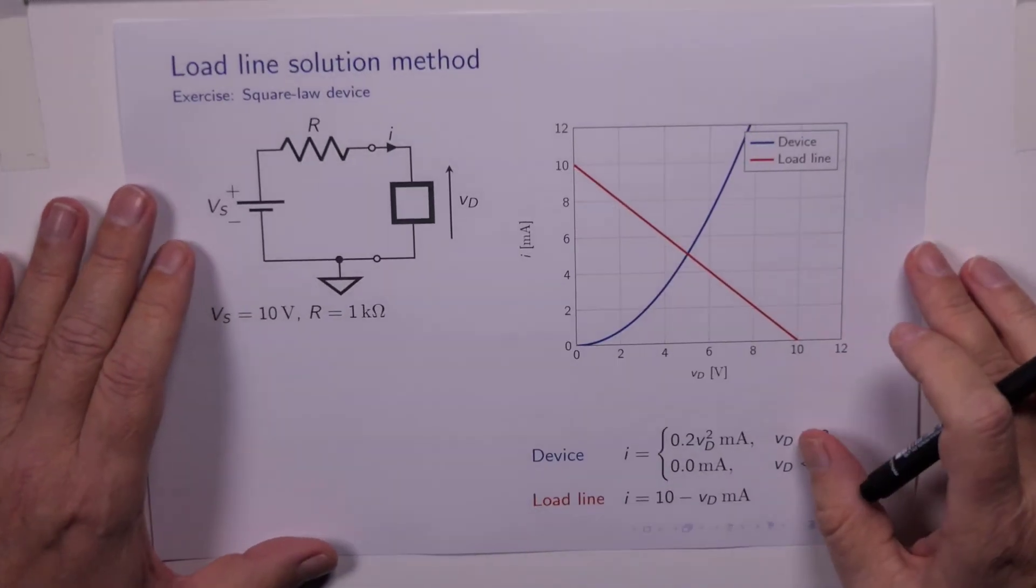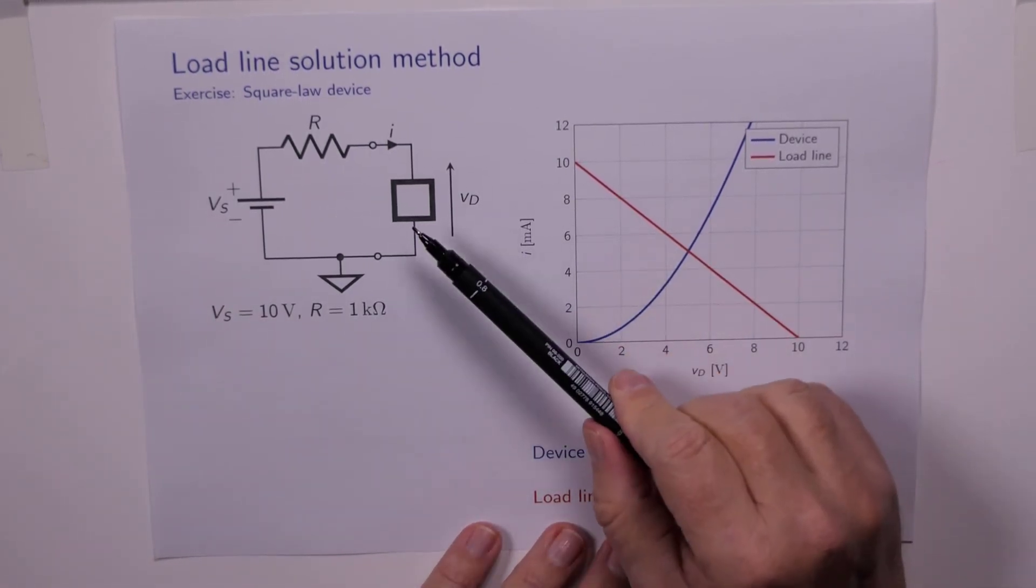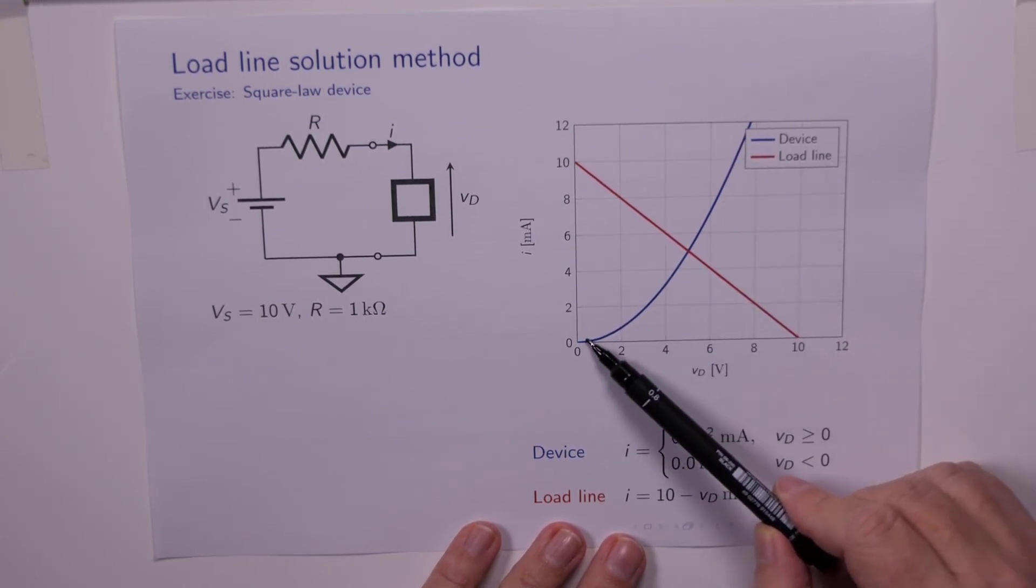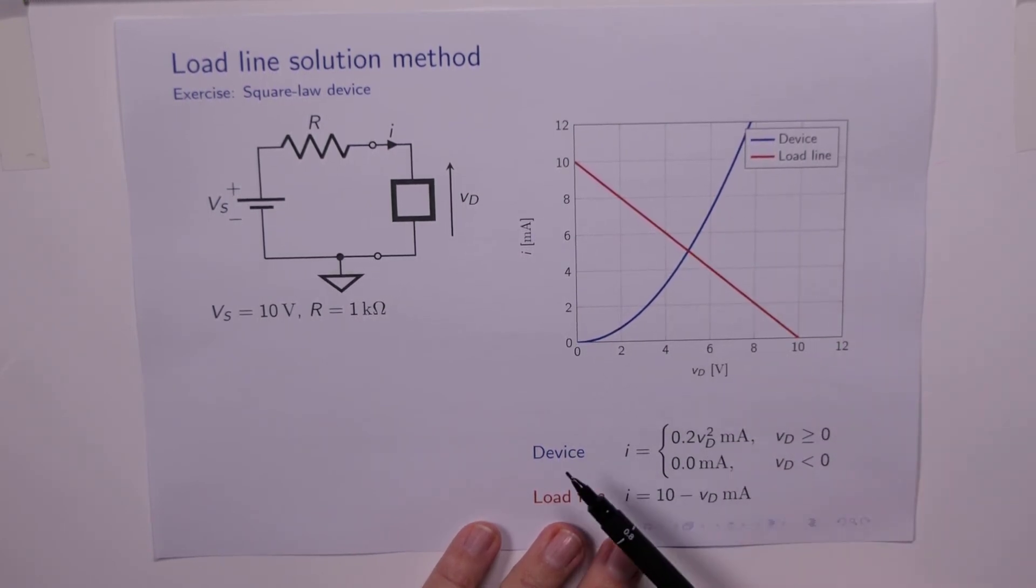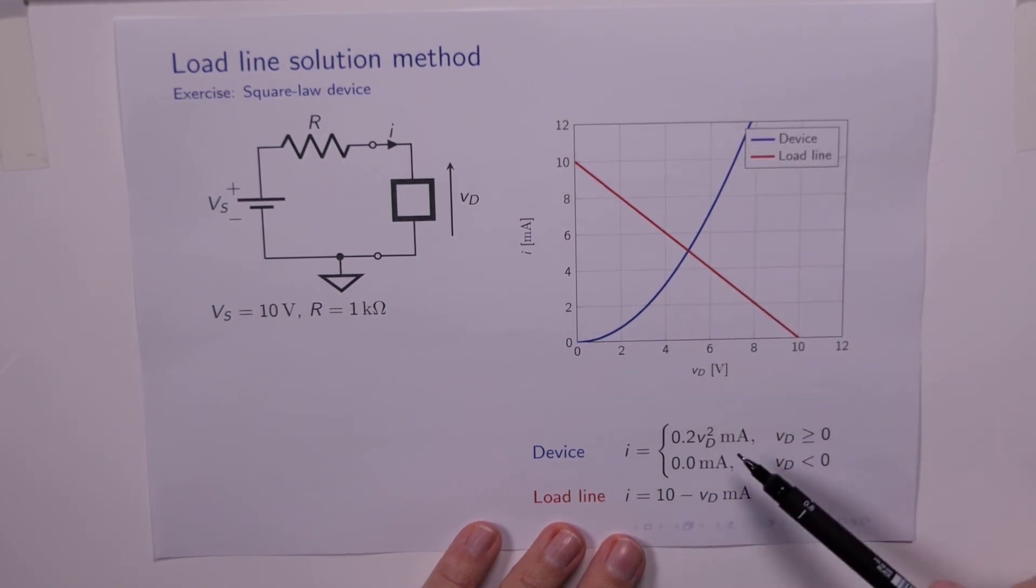Well, sometimes we can still calculate things exactly. For example, here I've got a square law device. My square law device is given by this equation, this curve here. And we're told that the current is equal to 0.2 Vd squared when Vd is positive. And it's equal to 0 for Vd negative.